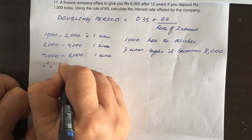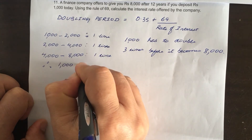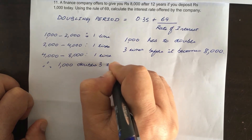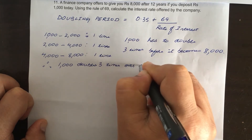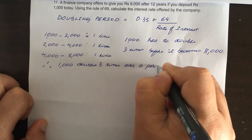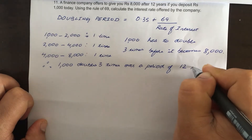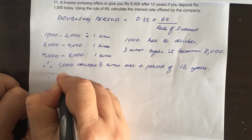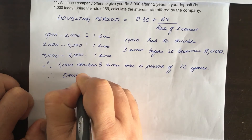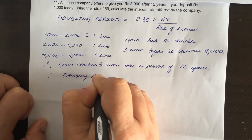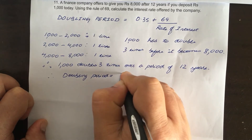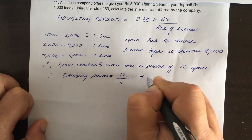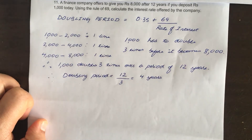So 1,000 rupees doubles 3 times over a period of 12 years. Therefore, the doubling period is equal to 12 years divided by 3, which equals 4 years. So the doubling period here is 4 years.